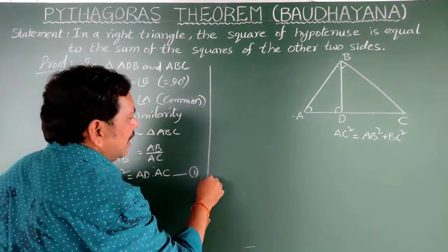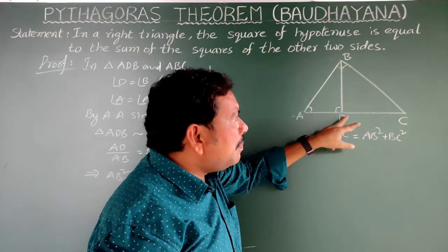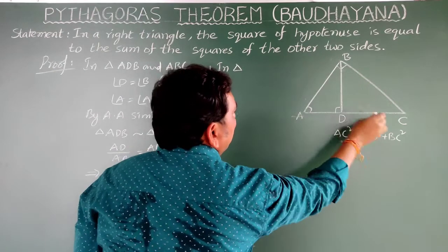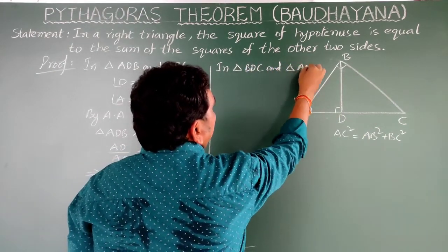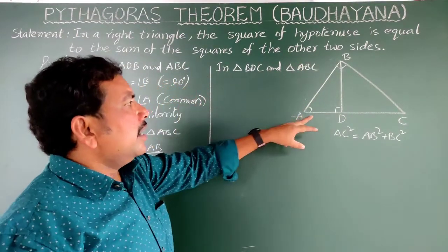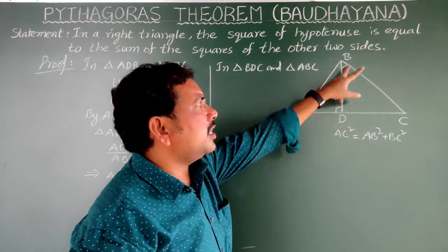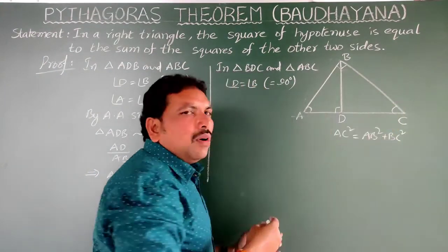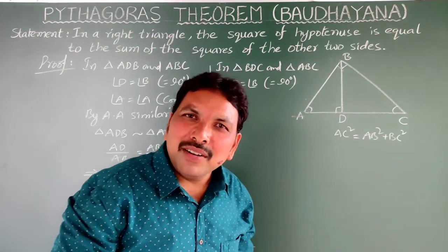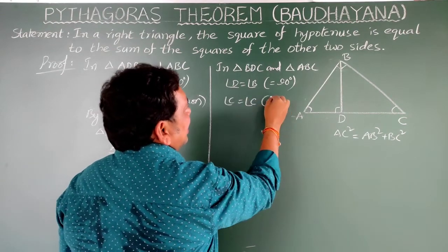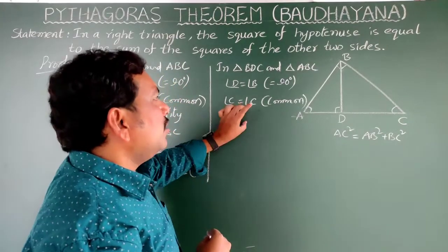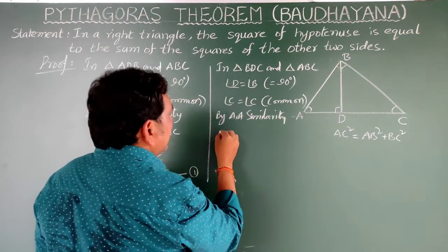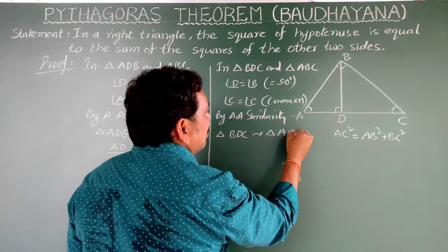Similarly, compare triangle BDC and triangle ABC. In triangle BDC and triangle ABC: angle D is equal to angle B — both are 90 degrees. And angle C is common to both triangles. So by AA similarity, triangle BDC is similar to triangle ABC.